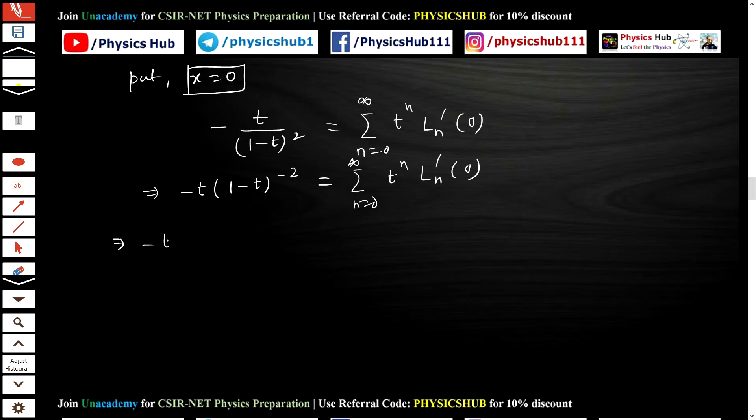Now what we can do, we can just expand this (1-t)^(-2) as 1 + 2t + 3t^2 + ... and so on. We are writing the nth term as n * t^(n-1). You can see the power of t is one unit less. Next term will be (n+1) * t^n, simple. And so on. This equals the sum from n=0 to infinity of t^n * ln'(0).